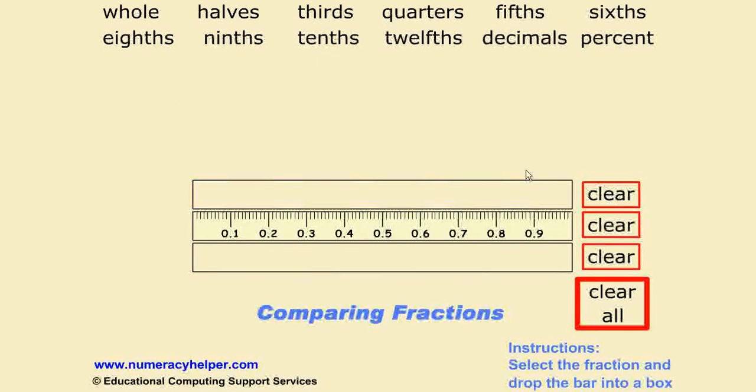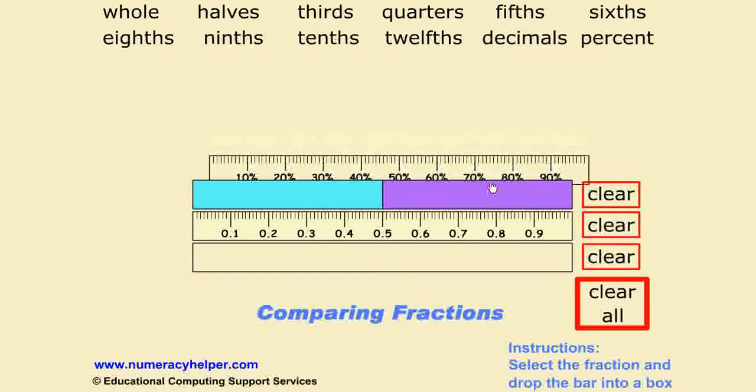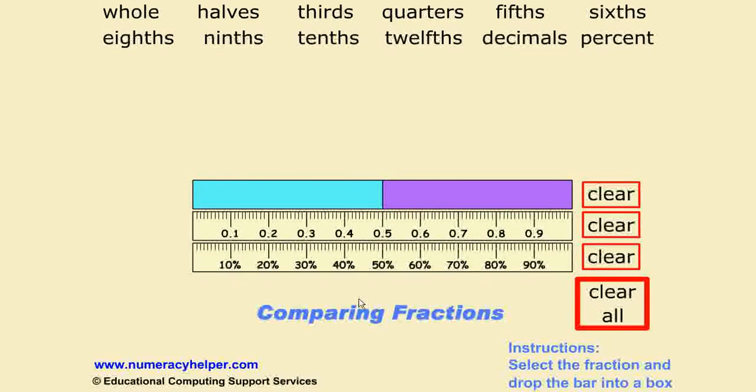Let's clear that, bring down halves and you can see that even more clearly. Of course, when we click on the percent button, we can bring down a percent ruler that will allow students to see quite easily how half is equal to 50% and also equal to 0.5.